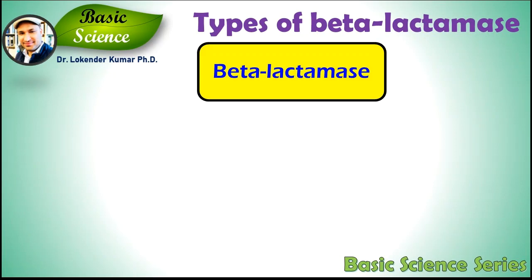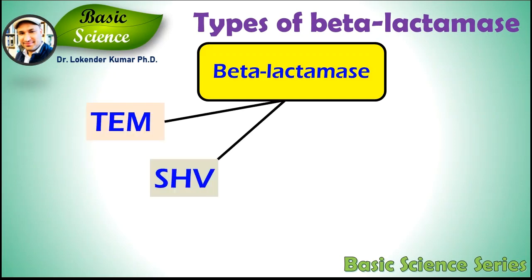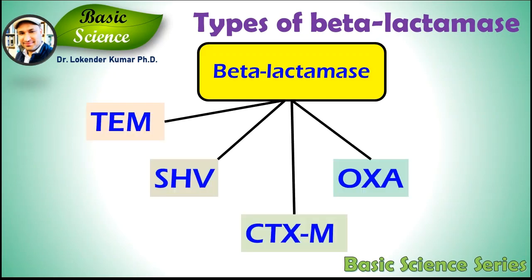For beta-lactamases, there are five major types of genes responsible for the synthesis of these enzymes: TEM, SHV, CTX-M, OXA, and ESBL. Although they are different, they originated from a common ancestor beta-lactamase gene. Let's discuss all five major genes one by one.